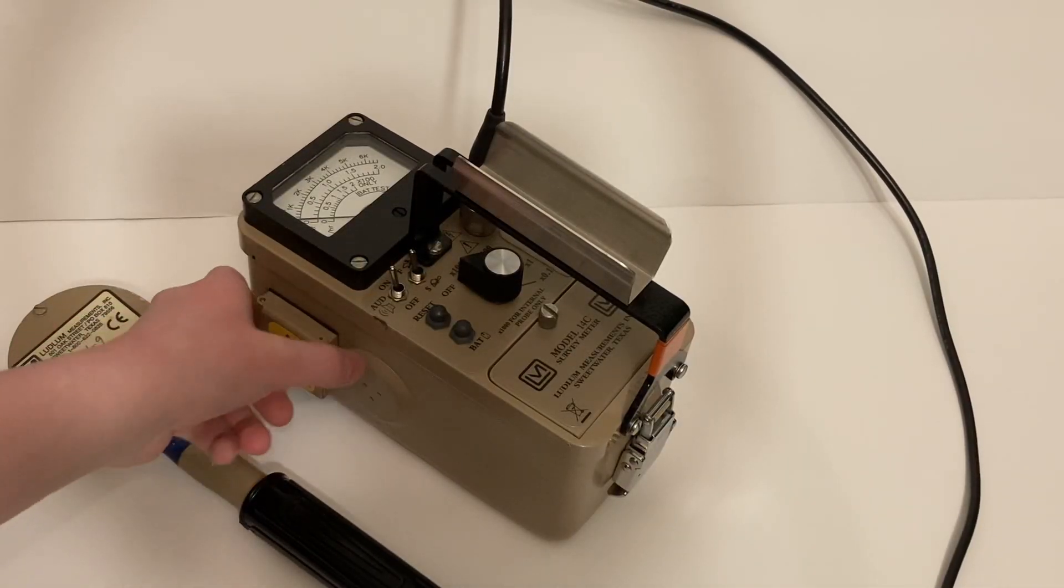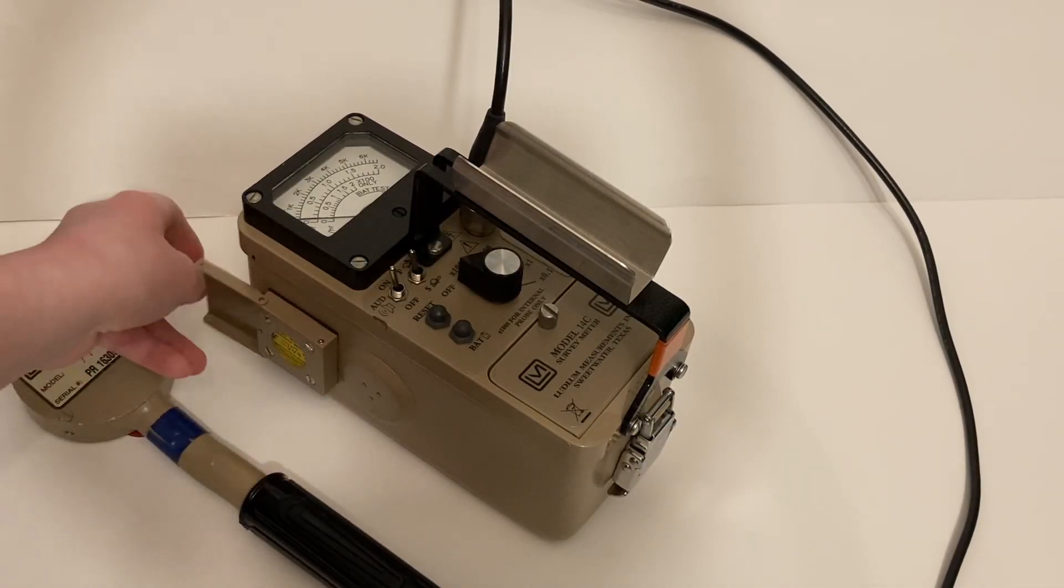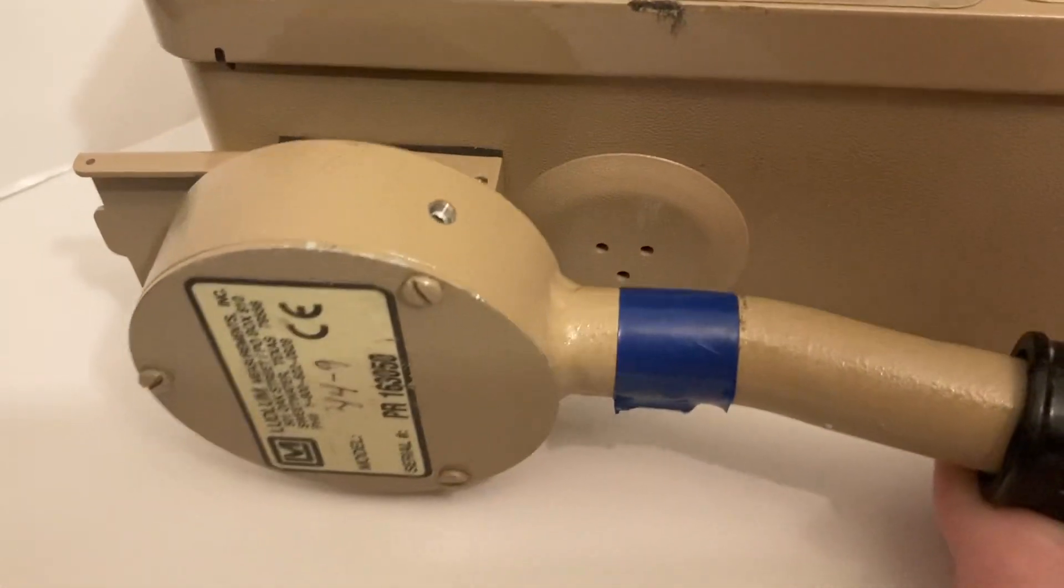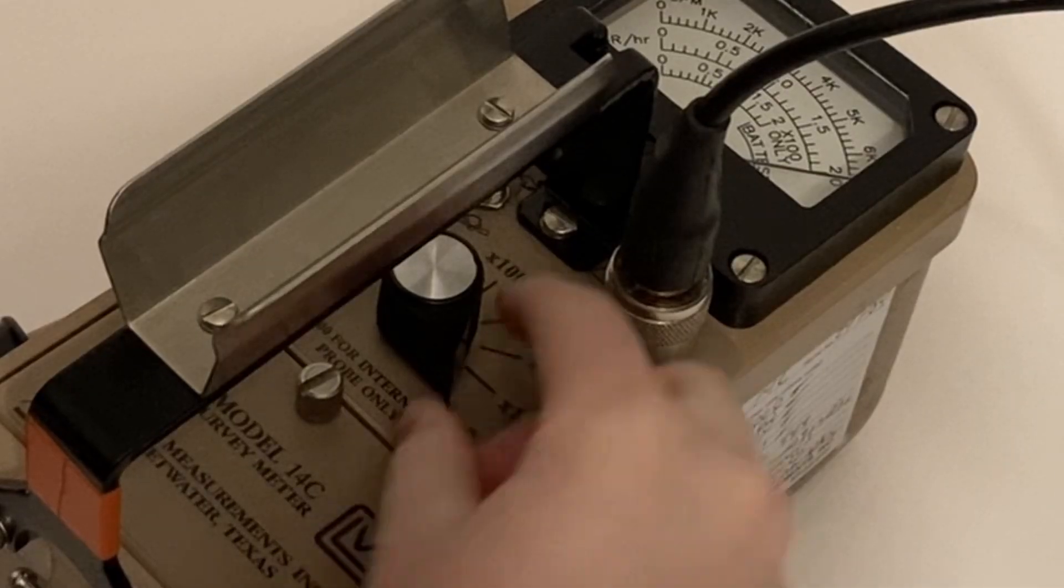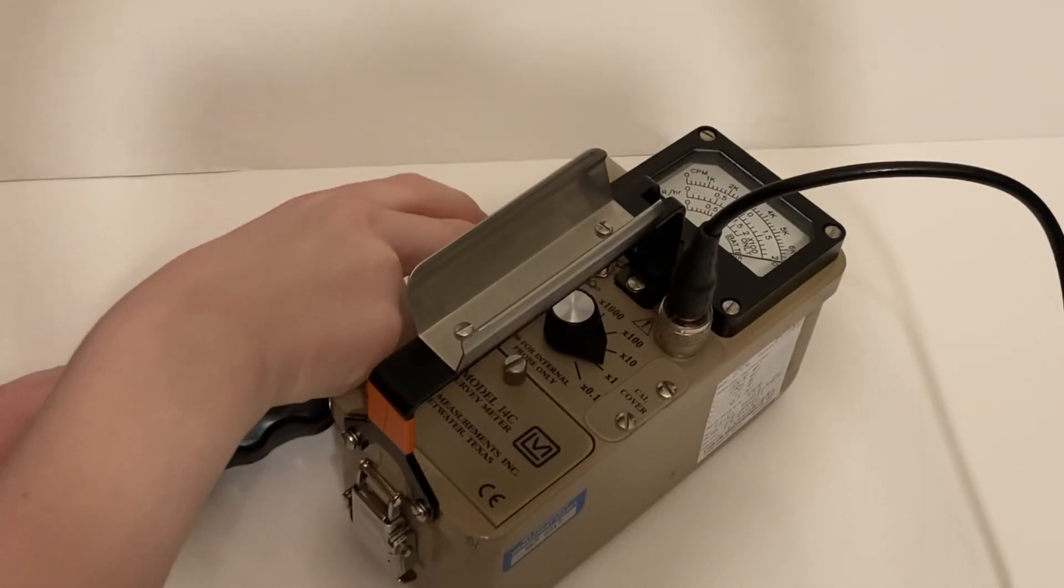Open the door on the CZM137 check source on the side of the instrument. Hold the window of the Model 44-9 up as close as you can to the check source without touching it. Select the appropriate range for the radiation being measured.